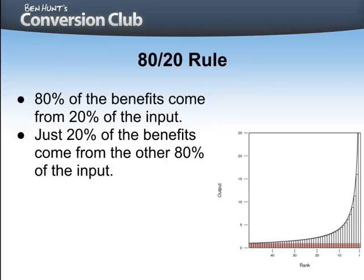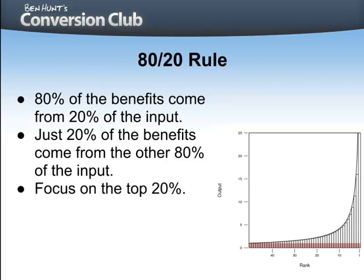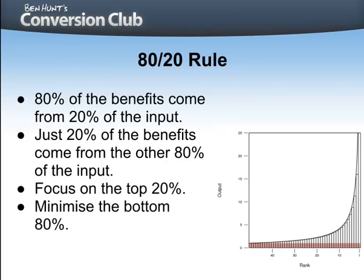In the job that you do, 80% of your time probably only generates 20% of the value, while your best 20% of time actually produces 80% of your value. The trick is to know which is which. The key message is we've got to focus on that top 20%. What's the top 20% of our customers who pay 80% of our revenue? And we've got to minimize the bottom 80% as well. Now, how does this apply to conversion improvement?